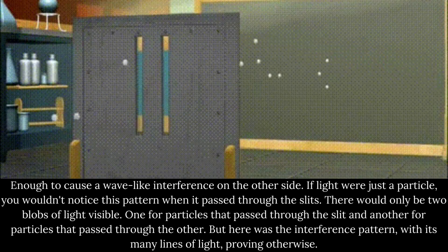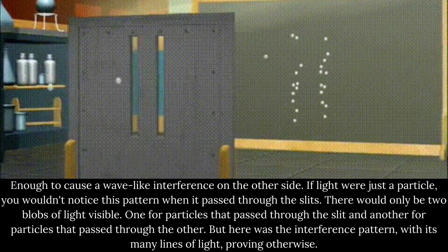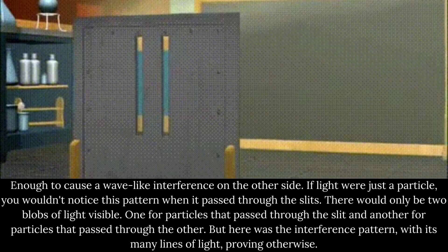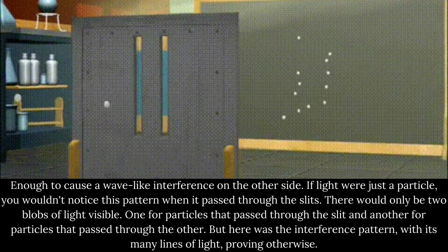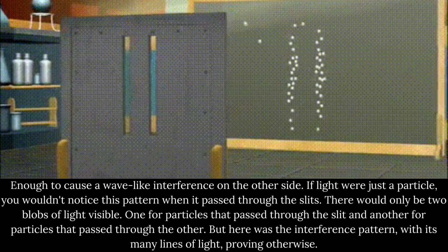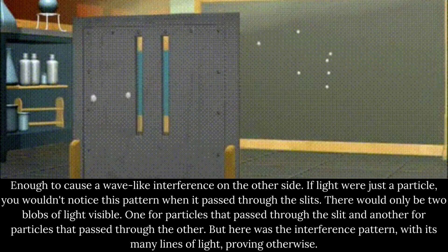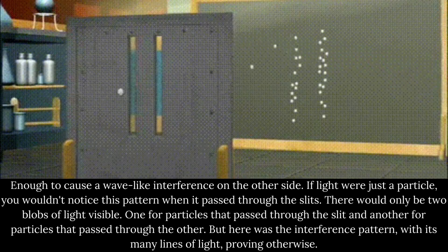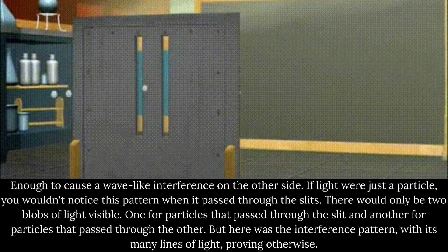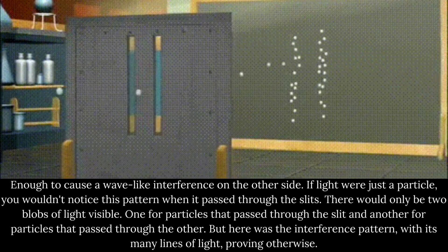If light were just a particle, you wouldn't notice this pattern when it passed through the slits. There would only be two blobs of light visible, one for particles that passed through one slit and another for particles that passed through the other. But here was the interference pattern, with its many lines of light, proving otherwise.